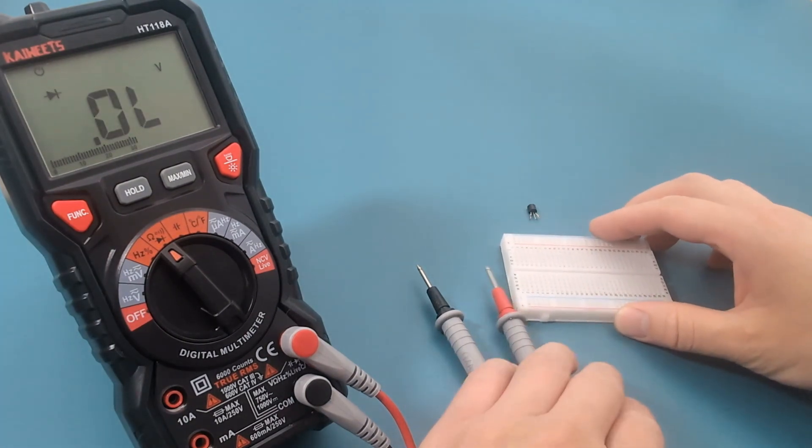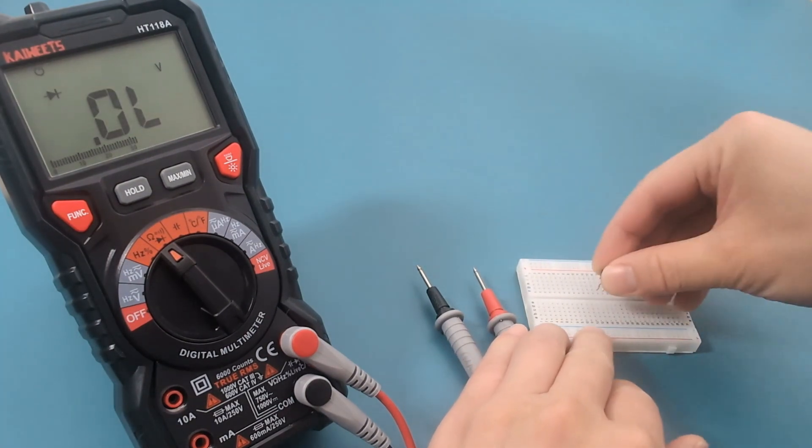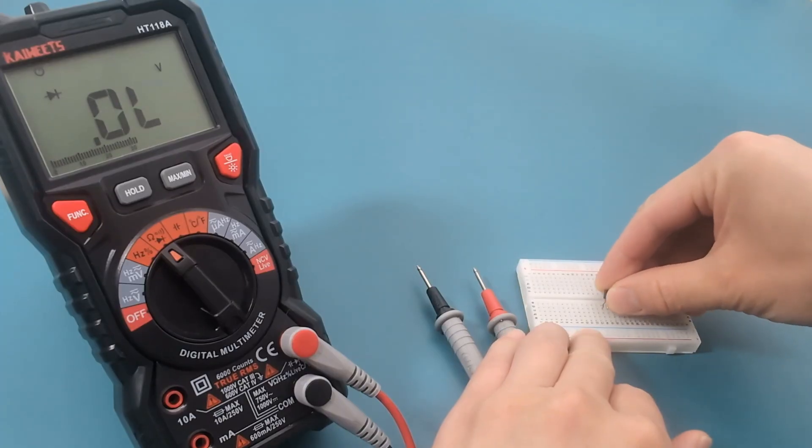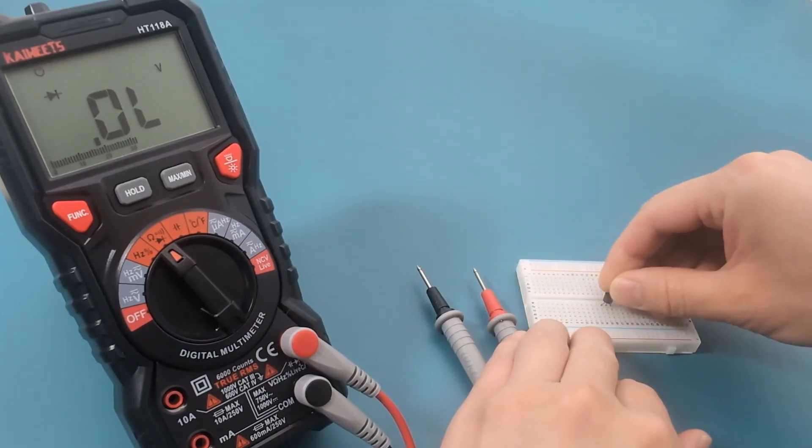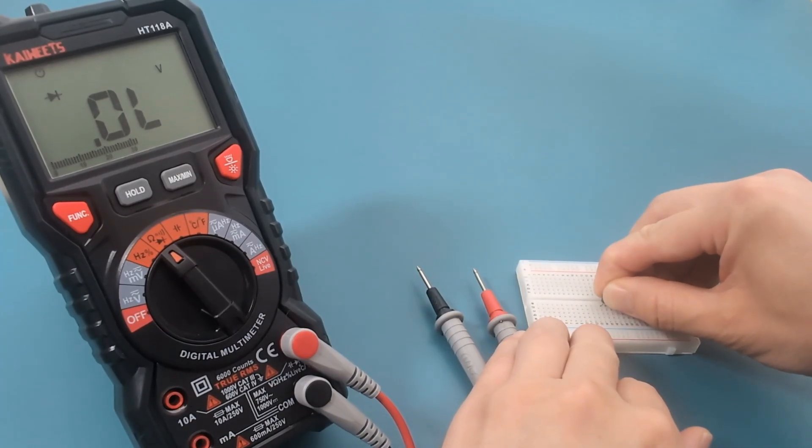For easier testing, insert the transistor into a breadboard. If you don't know if you have an NPN or PNP transistor, you can use the following method.